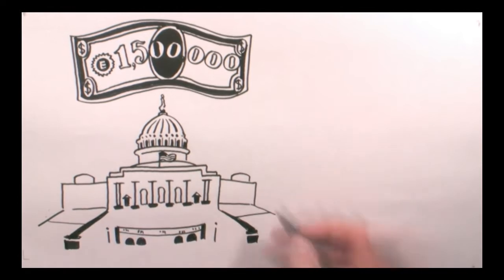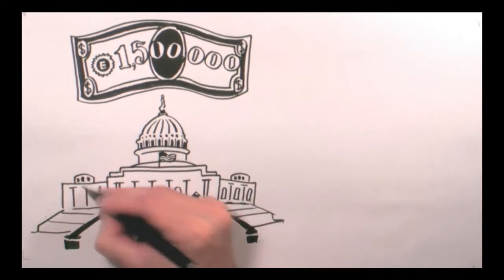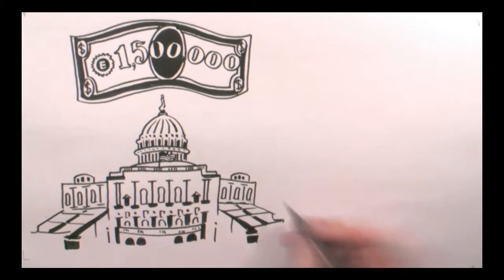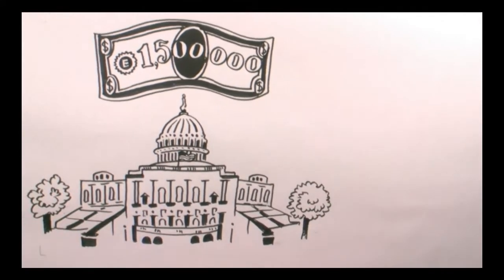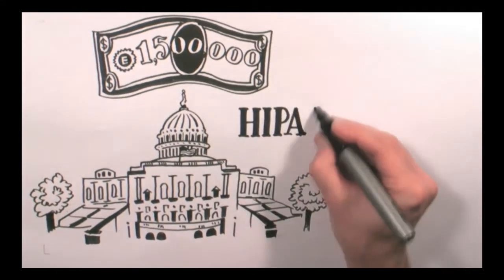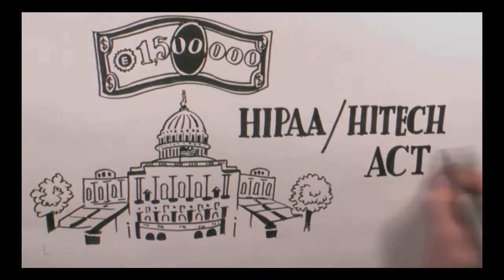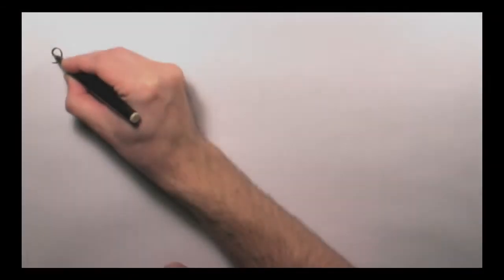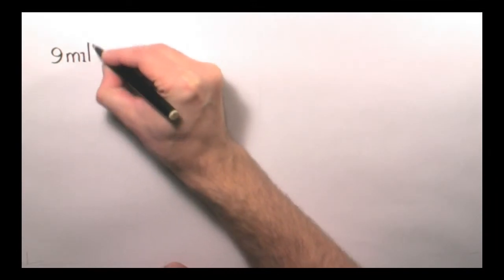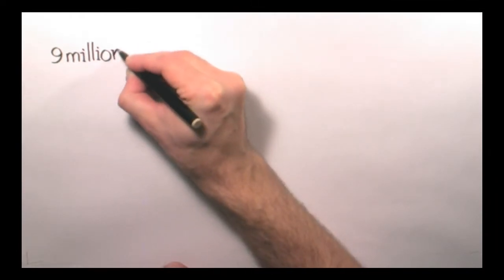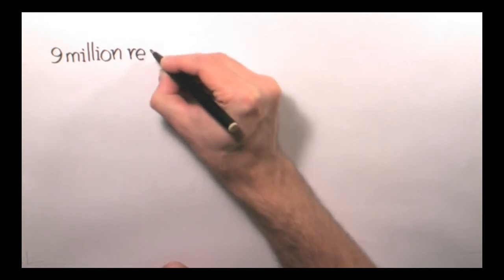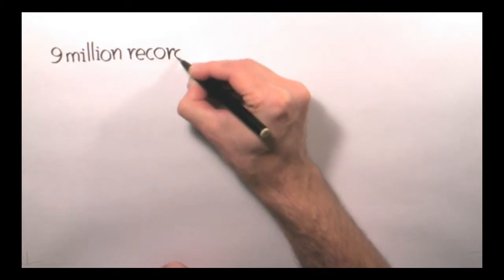The Ponemon Institute estimates that the total cost of a data breach, including notifying the patients and purchasing credit monitoring for each of them and investigating the issue, at about $214 per record. Do you know how many records can fit on this tiny little 8-gigabyte flash drive? Well, it depends on the format, of course, and the amount of data per record, but a good estimate is 9 million records.